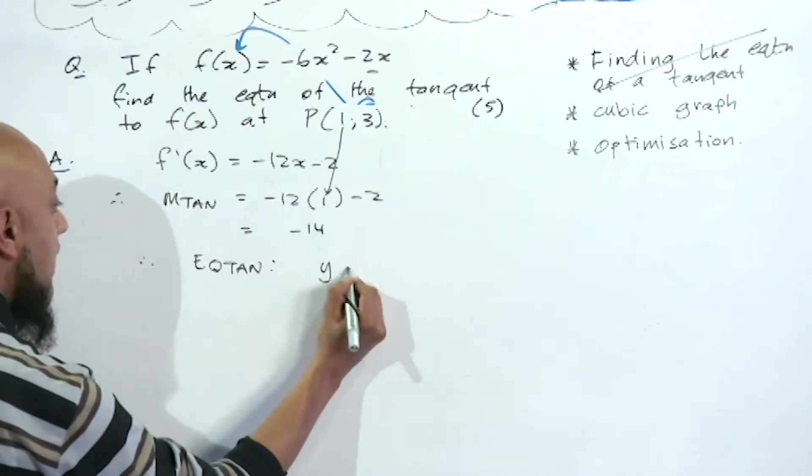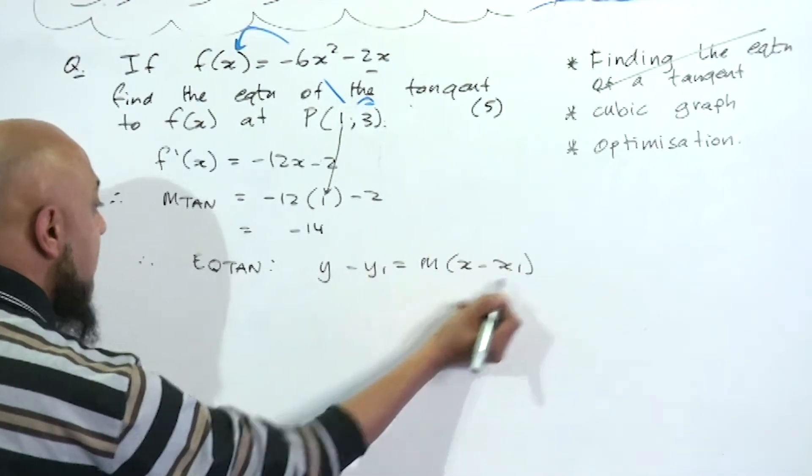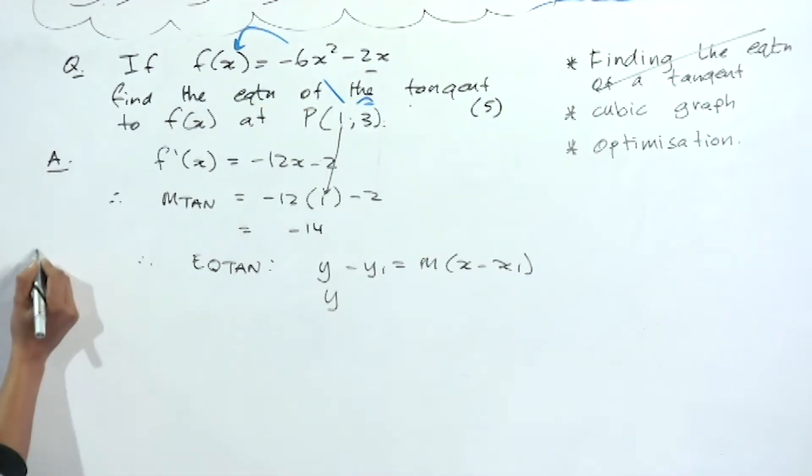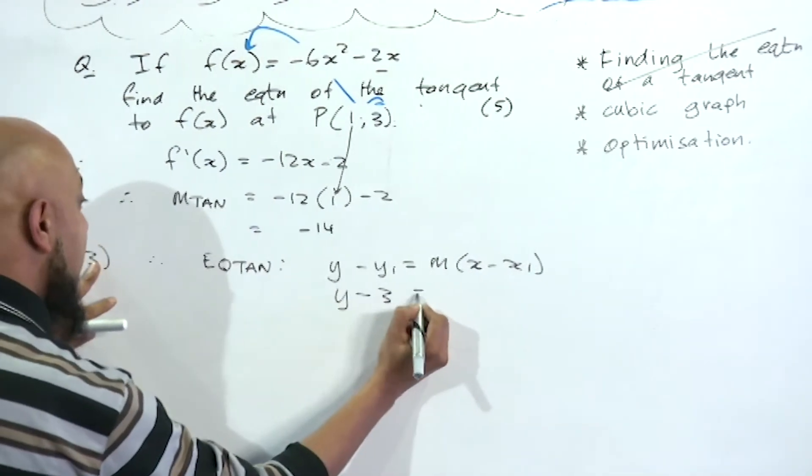Therefore, your equation of the tangent is given by y - y₁ = m(x - x₁). We're using the point (1, 3), so y - 3 = -14(x - 1).